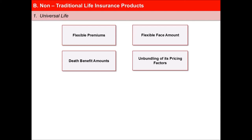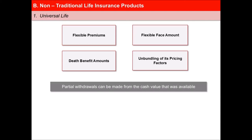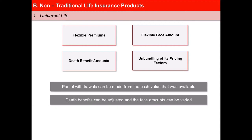The next is partial withdrawal, which means partial withdrawals can be made from the cash value that was available. And last, adjustment of death benefits, which could be adjusted and the face amounts could be varied.